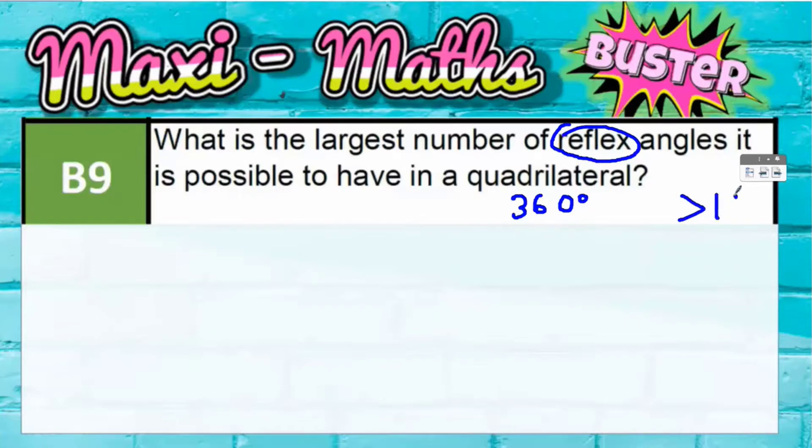So if you think about it, you could definitely have one reflex angle, but you can't possibly have two because as soon as you have two reflex angles, that means you would have two angles which are greater than 180 degrees.